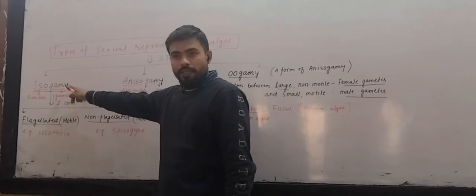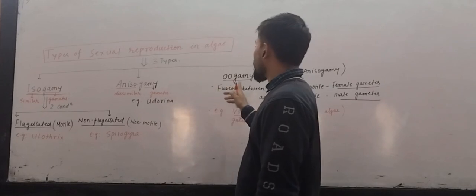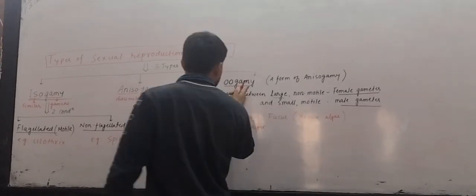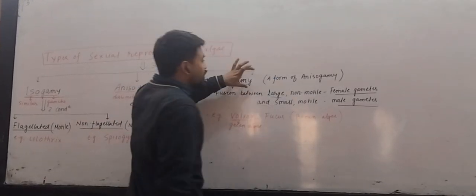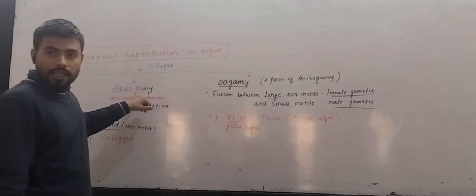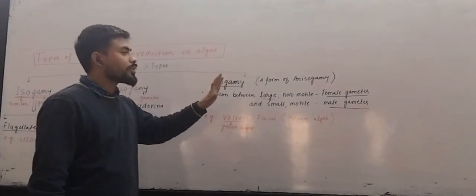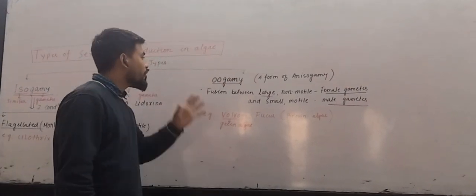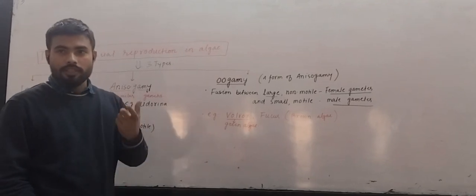Algae shows three diverse types of sexual reproduction: isogamy, anisogamy, and oogamy. Oogamy is a form of anisogamy and it is the most advanced form of sexual reproduction.